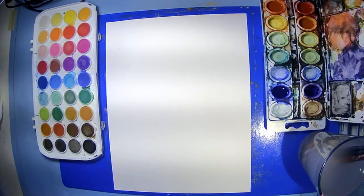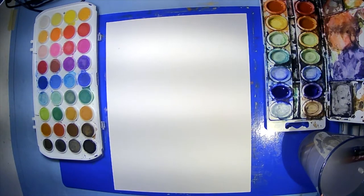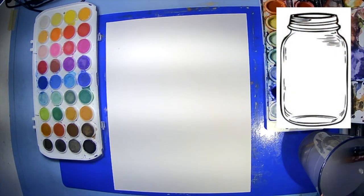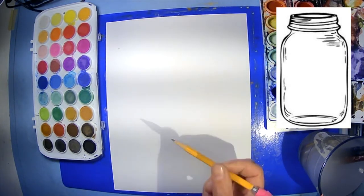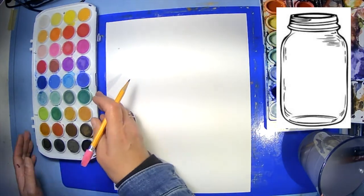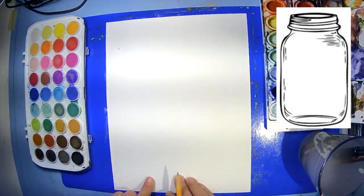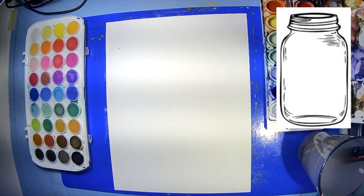You're going to want a pencil, an eraser if you have it, a Sharpie or a marker if you have one, or a crayon, something to kind of outline your drawing. We're going to be creating a three-dimensional ball jar, like a little jar with some flowers for celebrating the spring and summer coming soon.